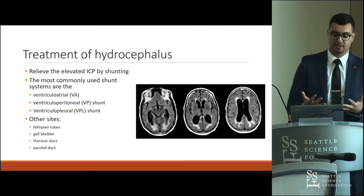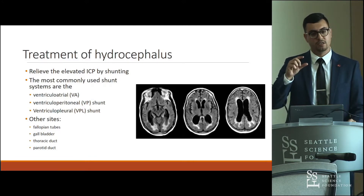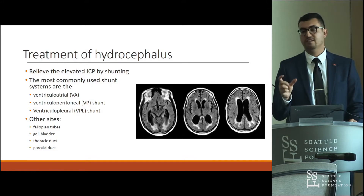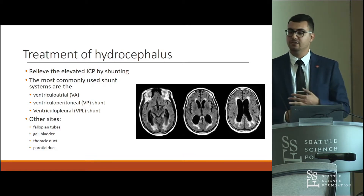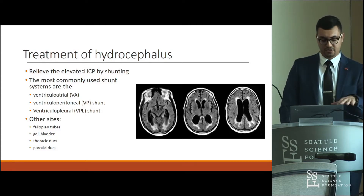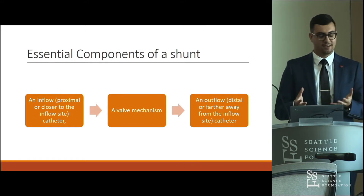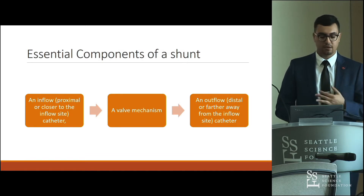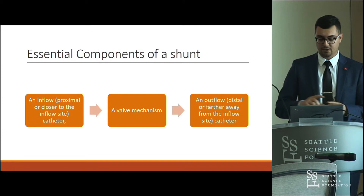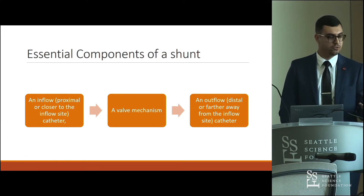To treat hydrocephalus and relieve elevated intracranial pressure, shunting re-diverts fluid away from the blocked area to a distal site for absorption. There are three commonly used shunting systems: the ventriculoatrial (VA) shunt, the ventriculopleural (VPL) shunt, and the ventriculoperitoneal (VP) shunt. Other less common receptacle sites include fallopian tubes, gallbladder, thoracic duct, and parotid duct. A shunt generally consists of a proximal inflow catheter, a valve mechanism monitoring differential pressures and outflow volume, and a distal outflow catheter to the chosen receptacle site.